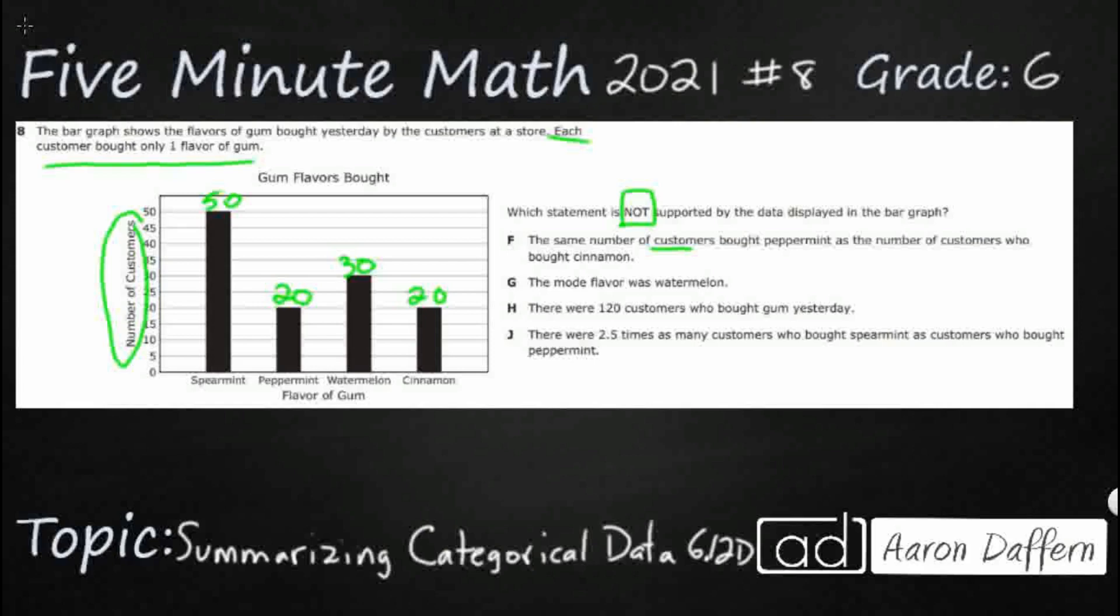So the same number of customers bought peppermint as the number of customers who bought cinnamon. Well, that's pretty easy. Not only do the bars visually look the same, we've already put numbers there. They're both 20. So yeah, that is correct, which means we're not looking for that answer.